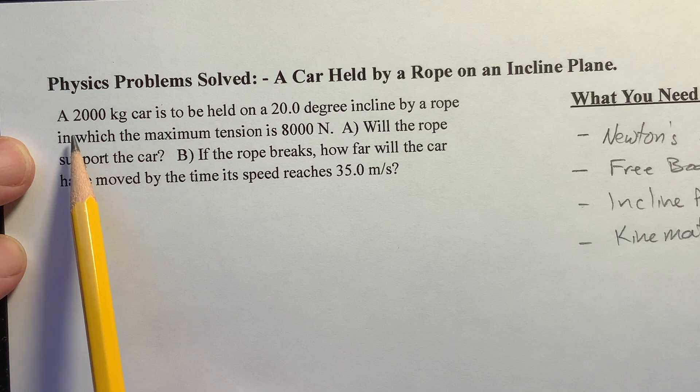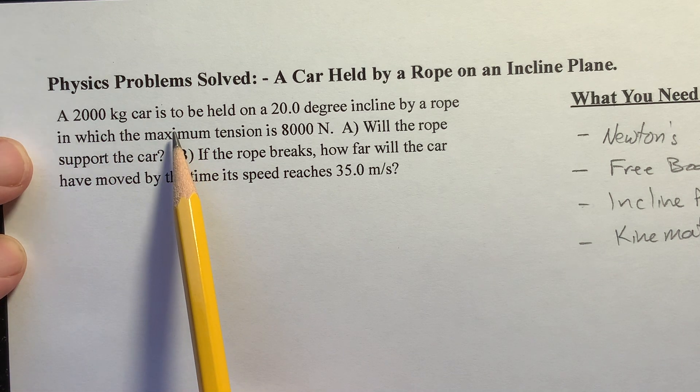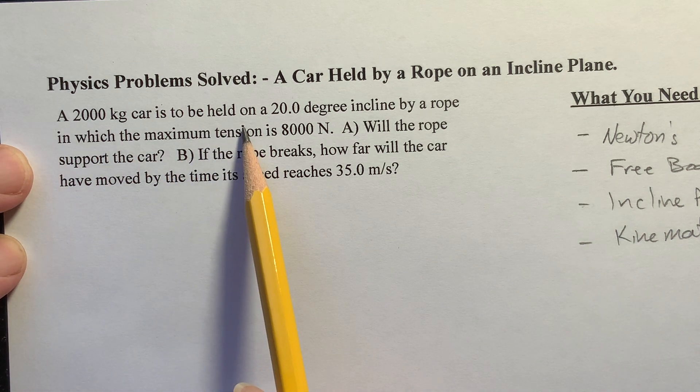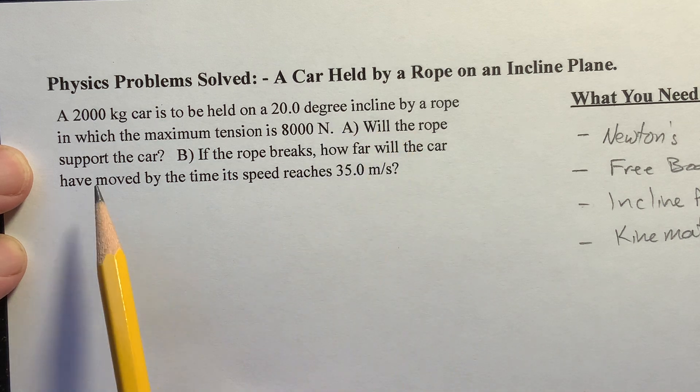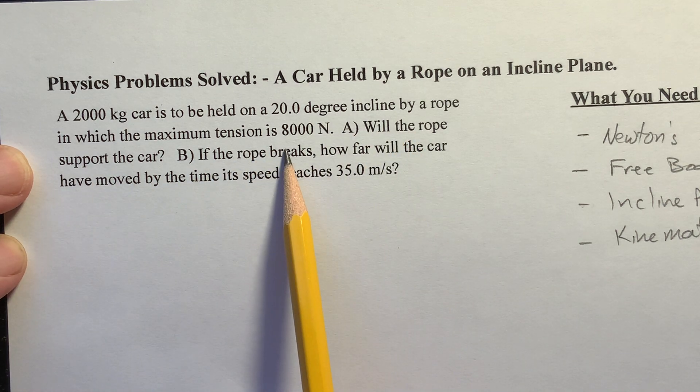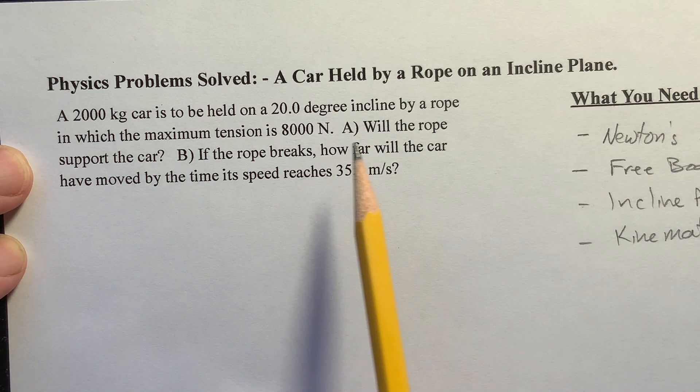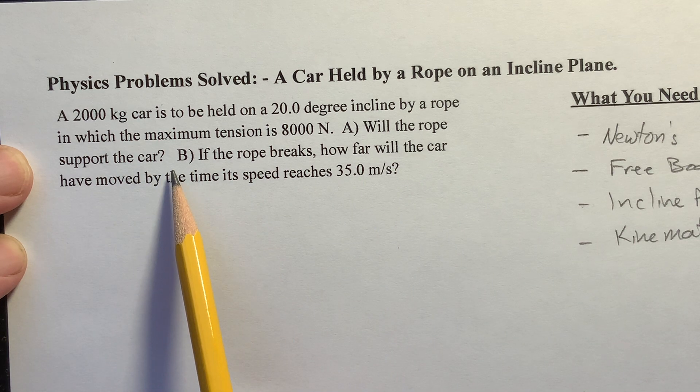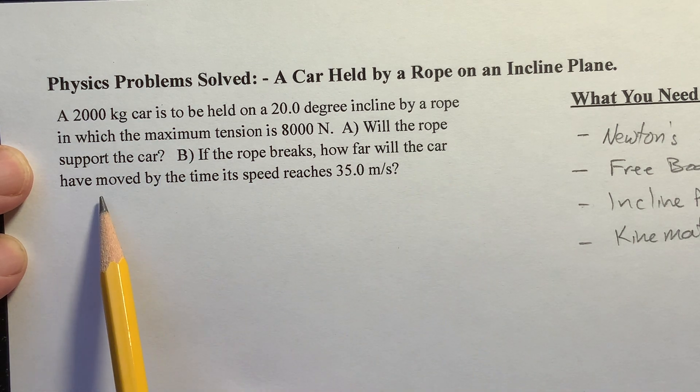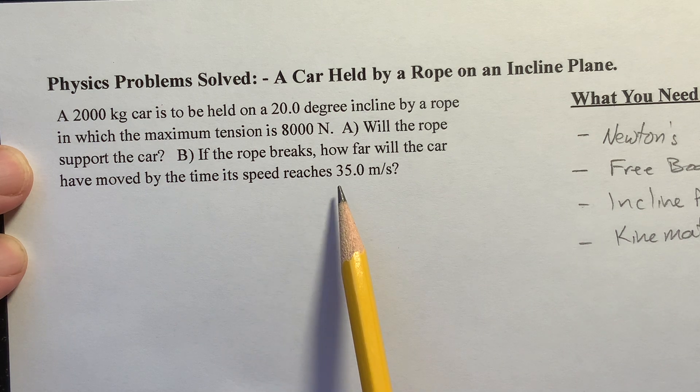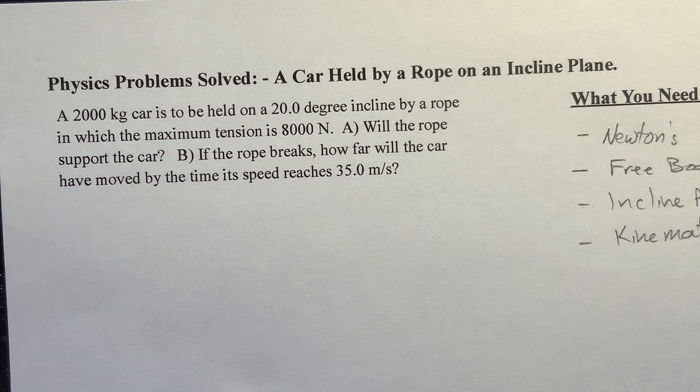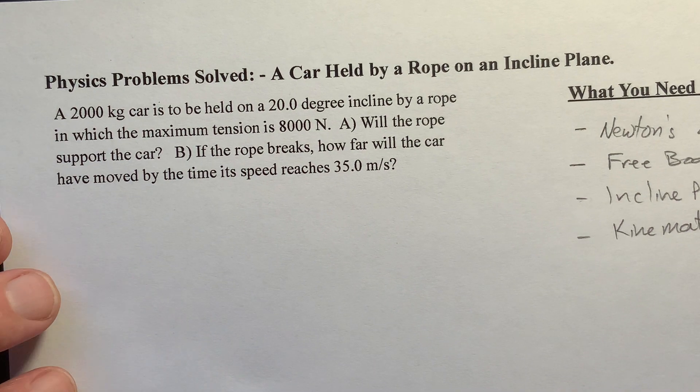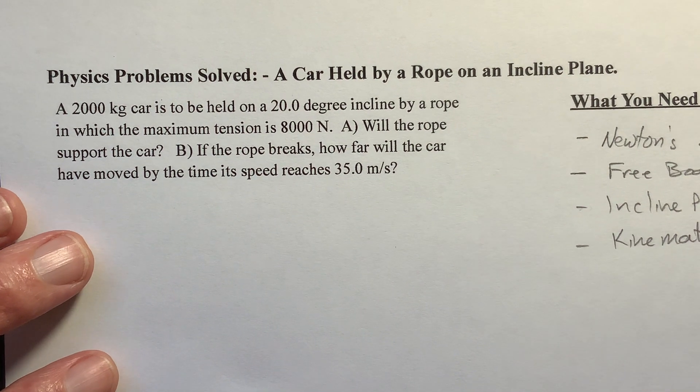All right, so we've got a 2,000 kilogram car is to be held on a 20-degree incline by a rope in which the maximum tension is 8,000 newtons. Will the rope support the car? If the rope breaks, how far will the car have moved by the time its speed reaches 35 meters per second? So this is really two problems in one here, part A and B. They're very separate problems.